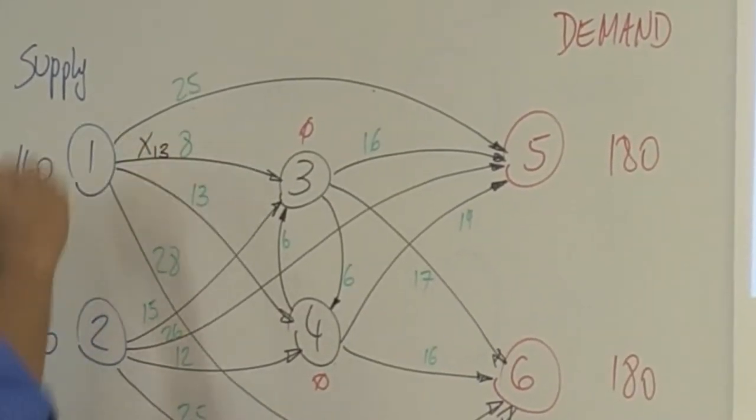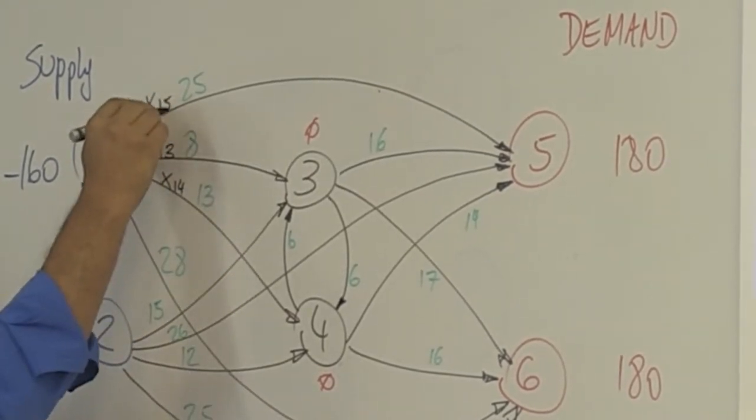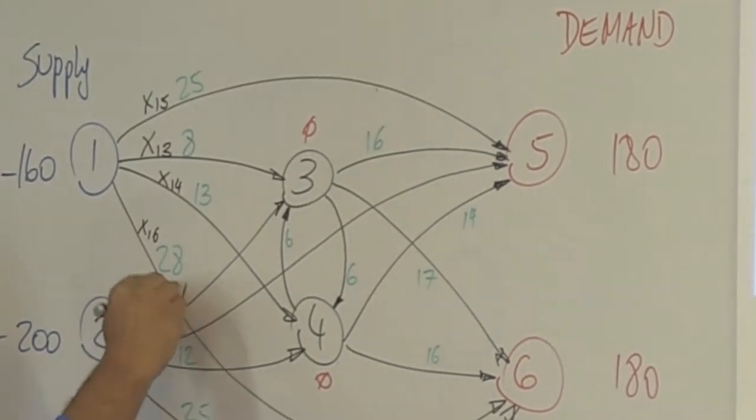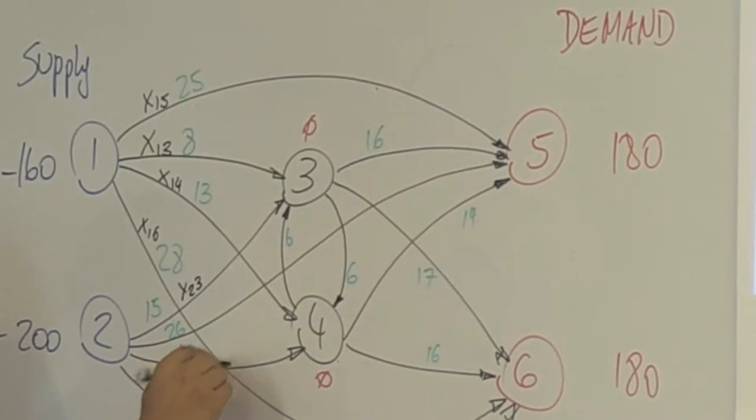And so this is X_13, X_14, X_15, and X_16, right? X_23 here, X_24, X_25, X_26.